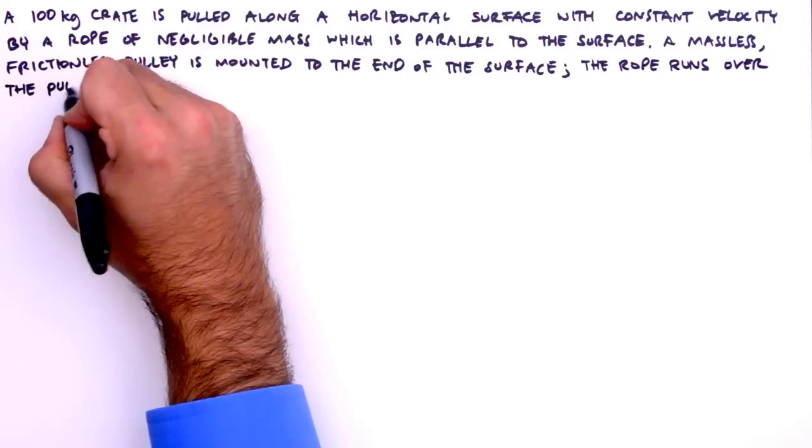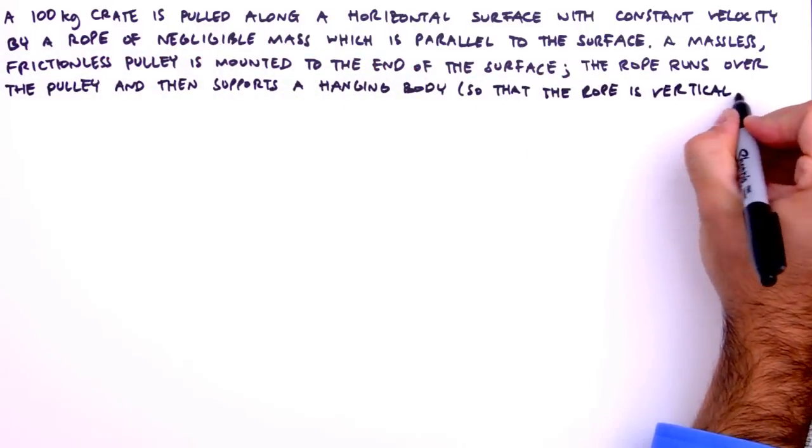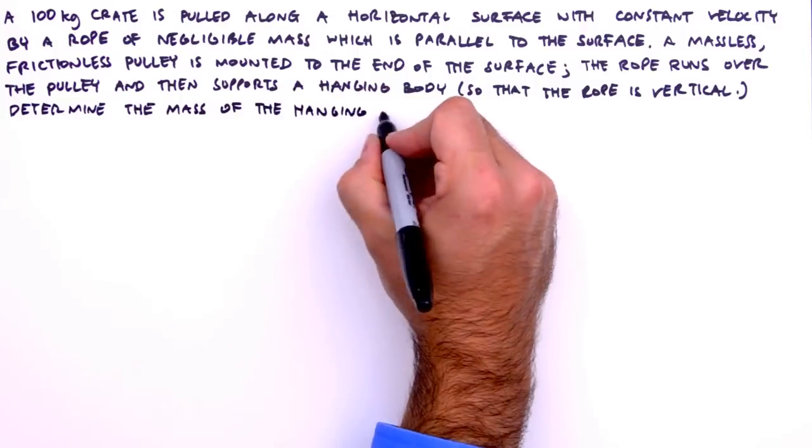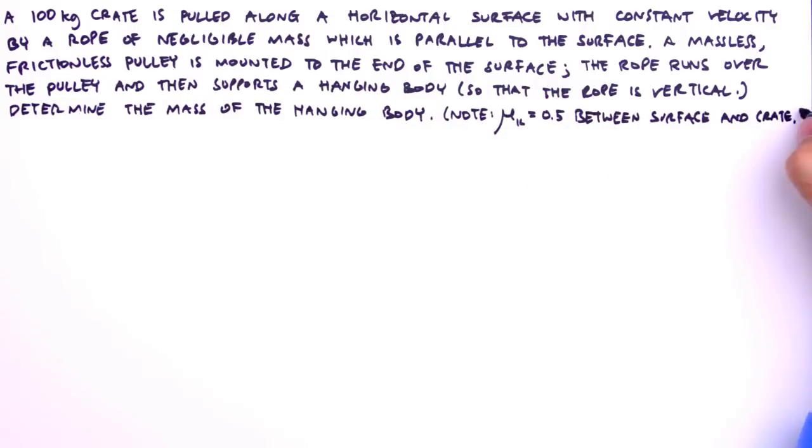Okay, the rope in our problem runs over the pulley and then supports a hanging body, so that the rope is vertical. Our task is to determine the mass of the hanging body, given the coefficient of kinetic friction between the surface and crate, of course.